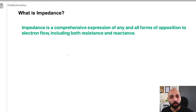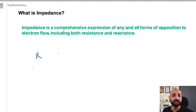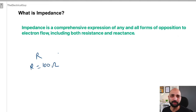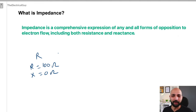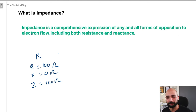When we talk about a perfect resistor, it offers 100% resistance — let's say 100 ohms — and has no reactance at all. Since impedance is a comprehensive term, you can also refer to this as an impedance of 100 ohms.